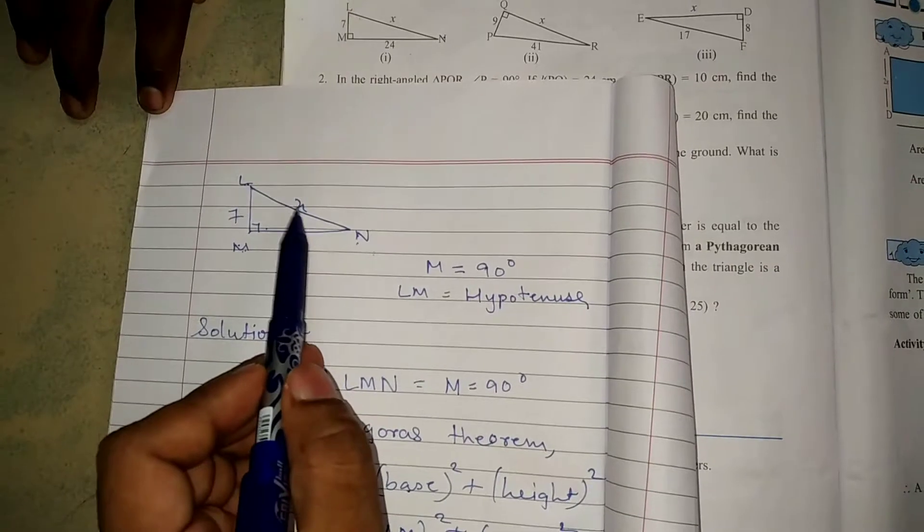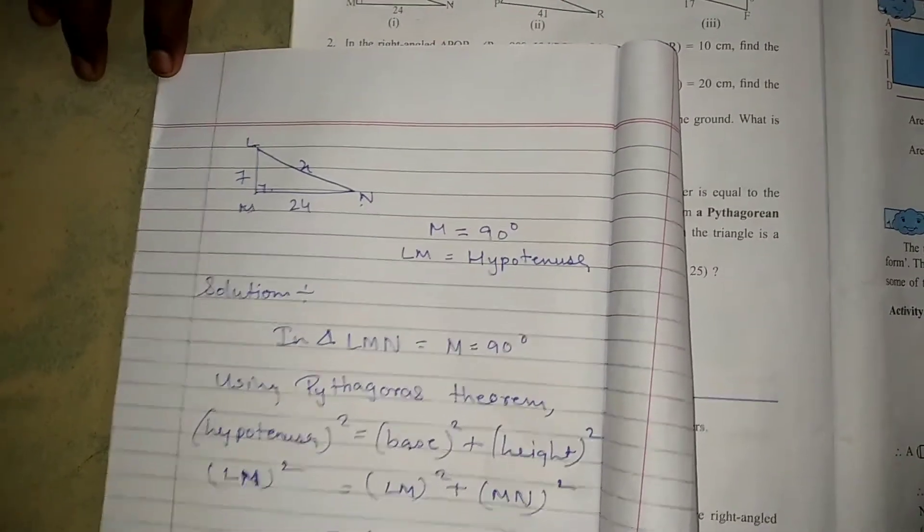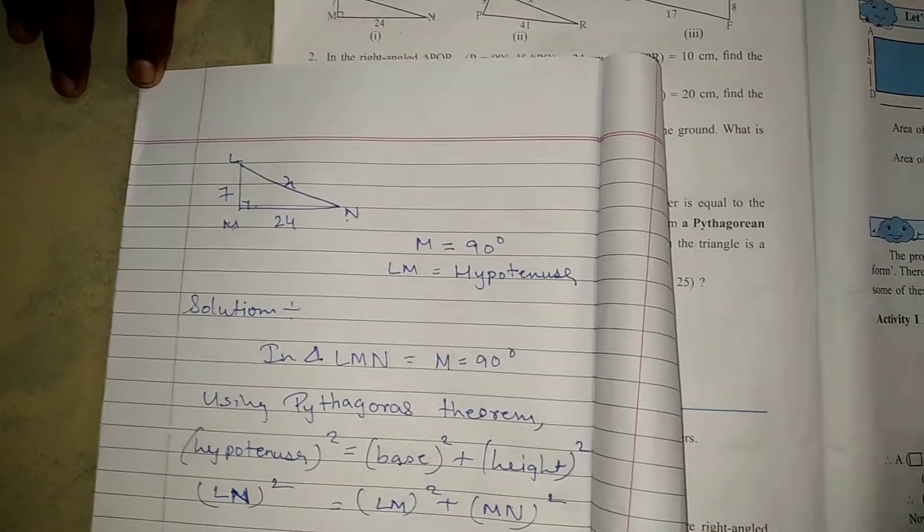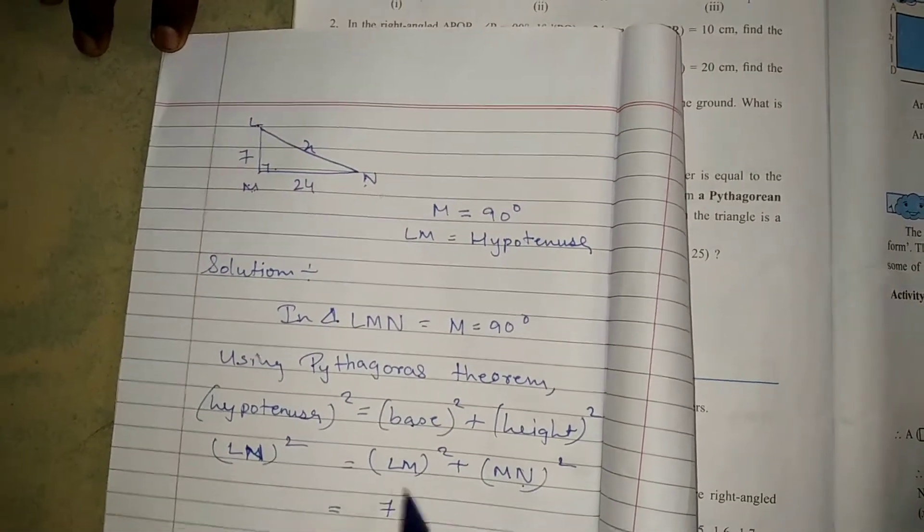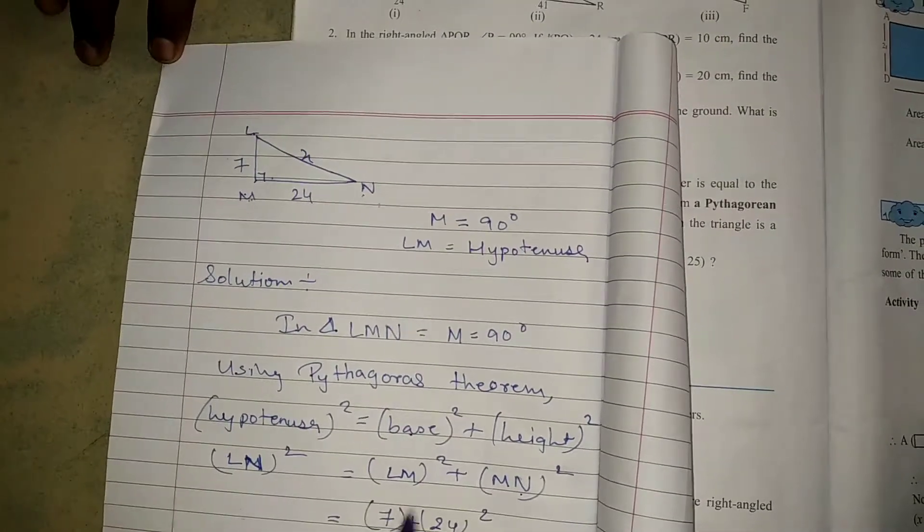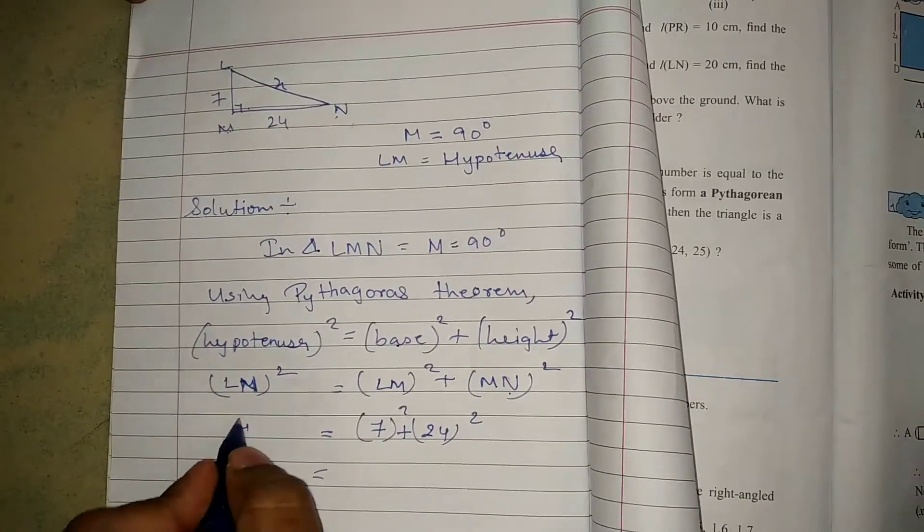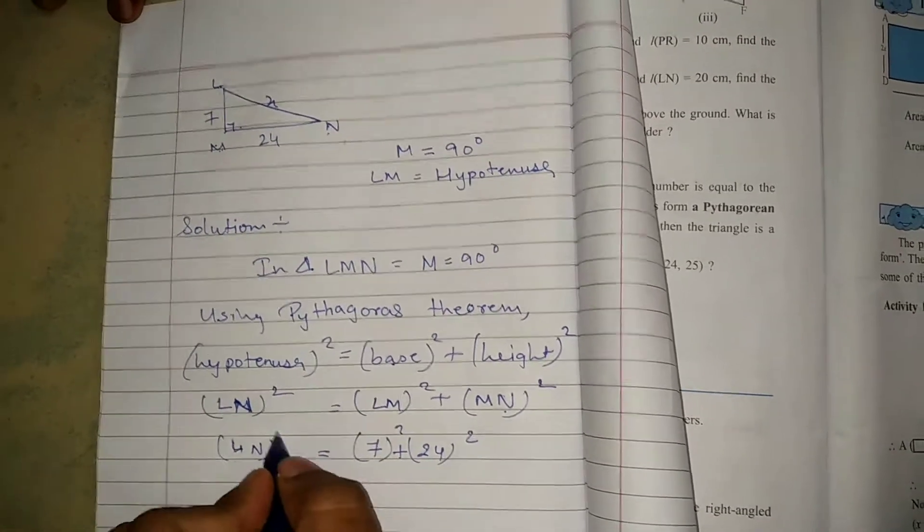You have to find the X. The values are given already in the diagram. LM is 7 and MN is 24. So X squared equals 7 squared plus 24 squared. Put the square up, don't forget this.